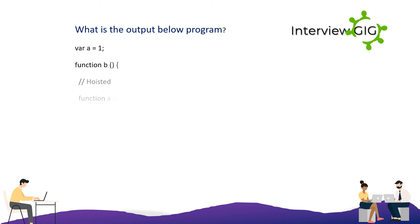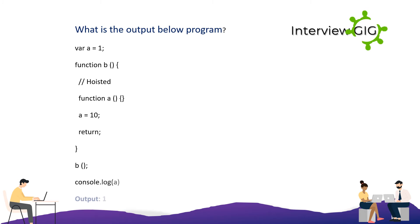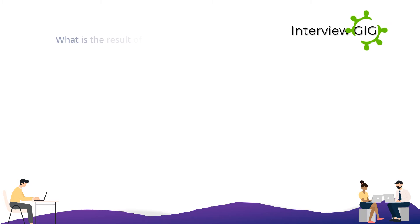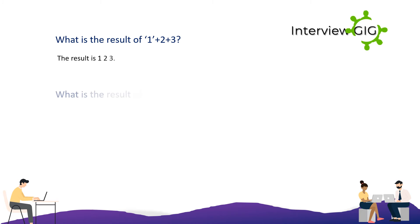What is the output of the following program? var a = 1; function b() { // hoisted function; a = 10; return b; } console.log(a); The output is 1. What is the result of 1 + 2 + '3'? The result is '123'.